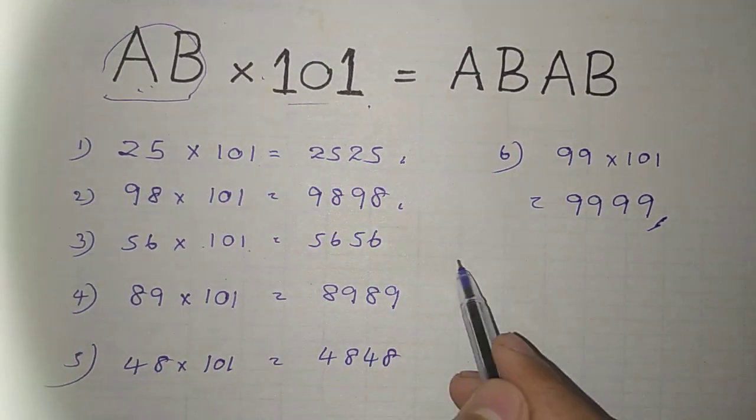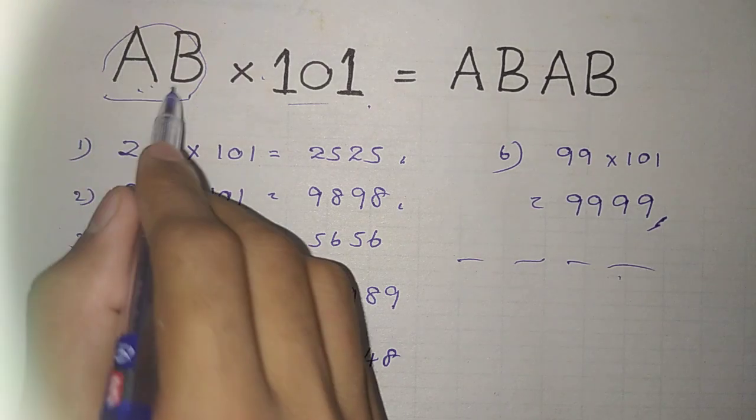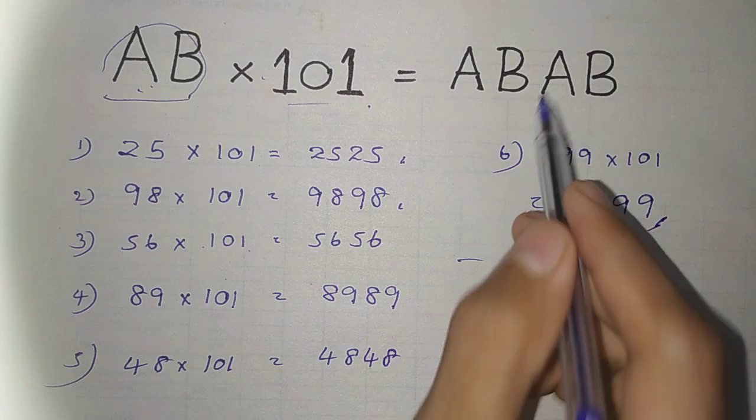We can use the routine: A is equal to 5, so we can use A, B, A, B.